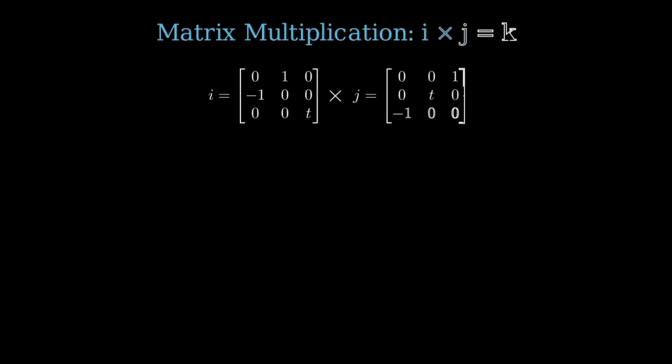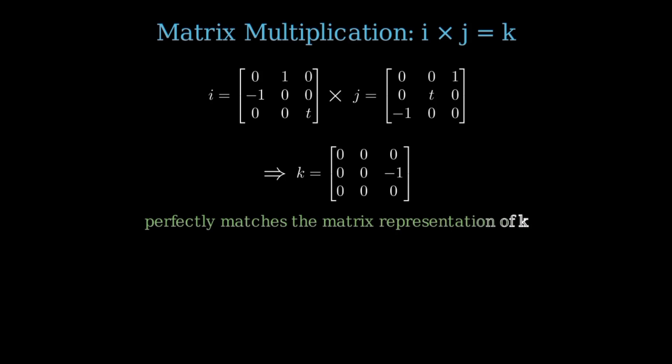Let's test this by multiplying the I matrix by the J matrix. So I times J is matrix I: 0, 1, 0, negative 1, 0, 0, 0, 0, I times matrix J: 0, 0, 1, 0, I, 0, negative 1, 0, 0. The result is row 1: 0, 0, 0, row 2: 0, 0, negative 1, row 3: 0, 1, 0, which perfectly matches the matrix representation of K.